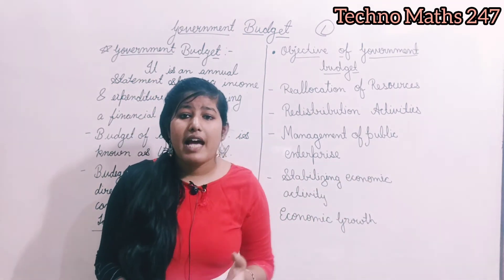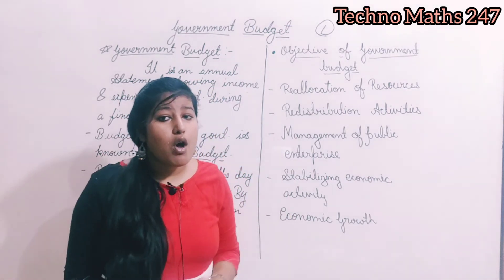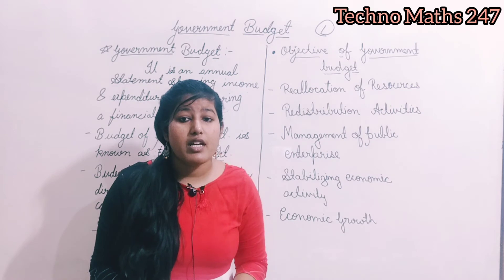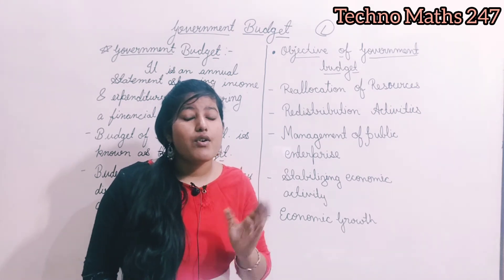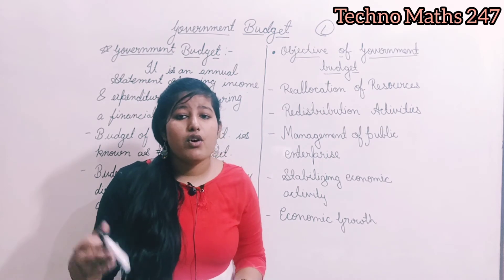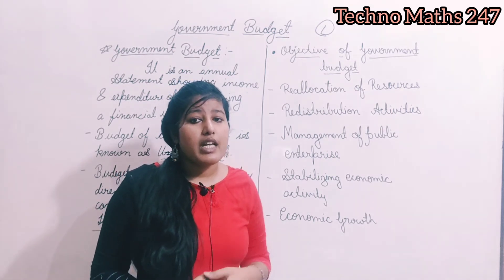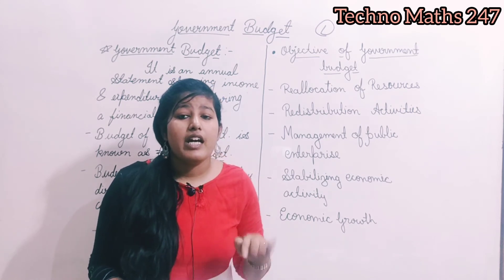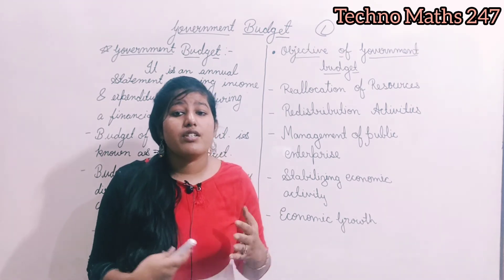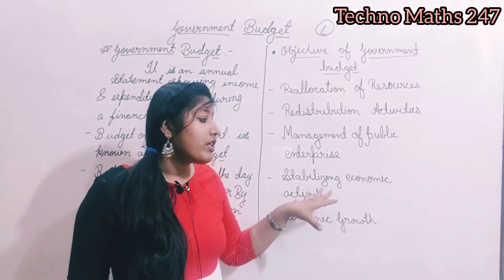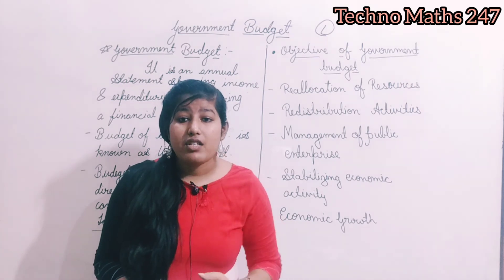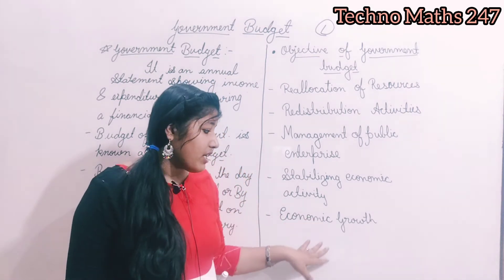तो यह भी हमारे government budget का एक बहुत ही important point है। फिर आता है stabilizing economic activity। इसमें क्या है कि हमारी जो economic growth है उसको stabilize करना, एक balanced way में run करना। ऐसा नहीं हो कि unbalanced growth हो जाए, richer section grow कर जाए और poorer section पूर ही रह जाए, urban area grow हो जाए और rural area under-developed रह जाए। हमें एक stabilized measure लेना है ताकि wealth और income की distribution सारे people में equal हो।